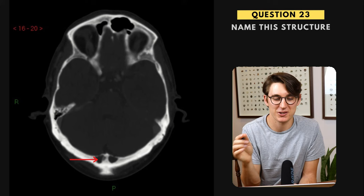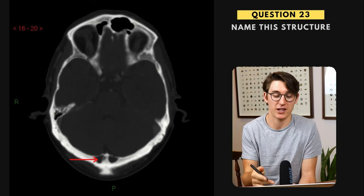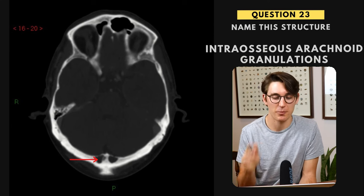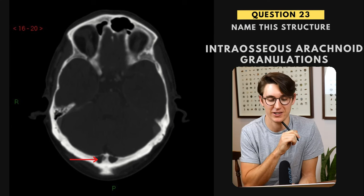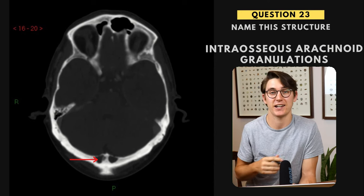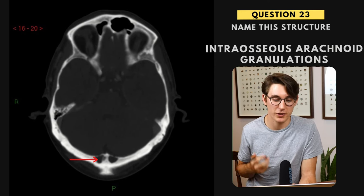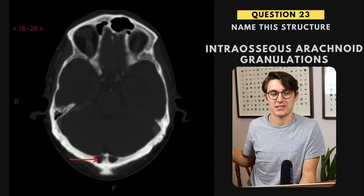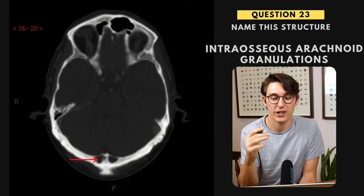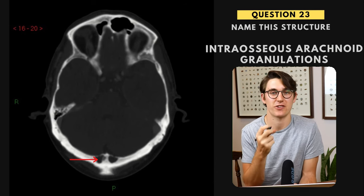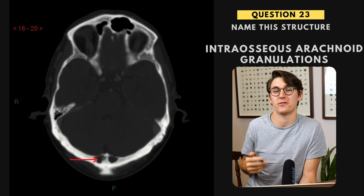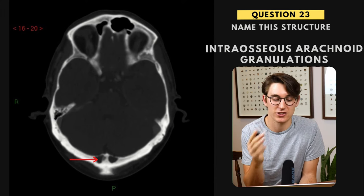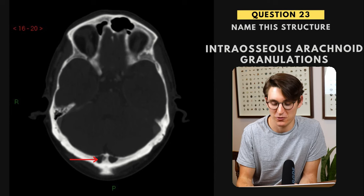Question twenty-three — this may look abnormal but it is a normal anatomical variant: intraosseous arachnoid granulations. Arachnoid granulations are what resorb our CSF and drain it into the venous system away from the brain. You can get intraosseous arachnoid granulations — they still function normally. These are not pathology, not lytic bone lesions. This is a normal anatomical variant.